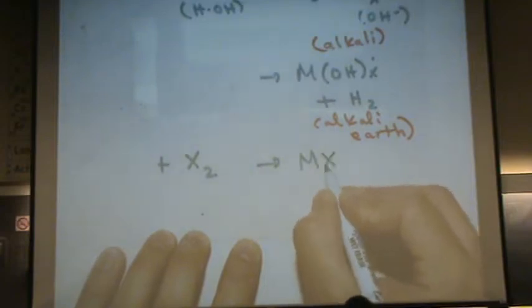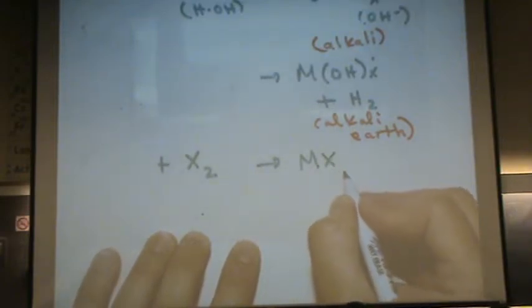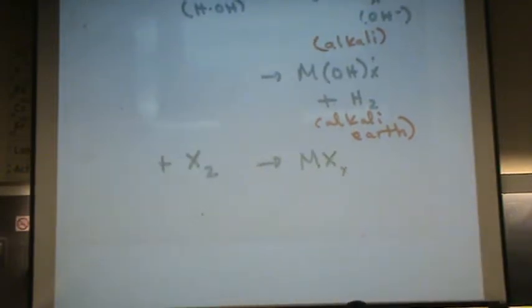Just notice for each of these examples, we're just sticking whatever it is onto the metal. It doesn't matter what we're adding. Hydrogen, oxygen, a halogen. It just sticks onto the metal.